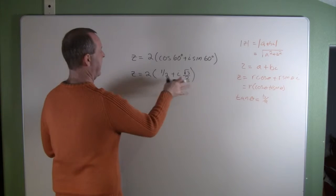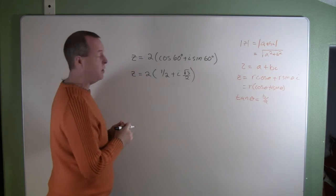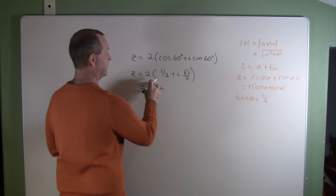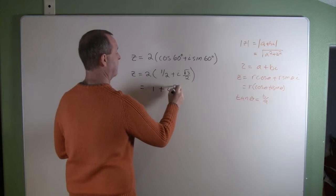Let's clean this up a little bit. I can multiply the 2 through, so that equals 2 times 1/2 which is 1, and 2 times i root 3 over 2 gives me i root 3.